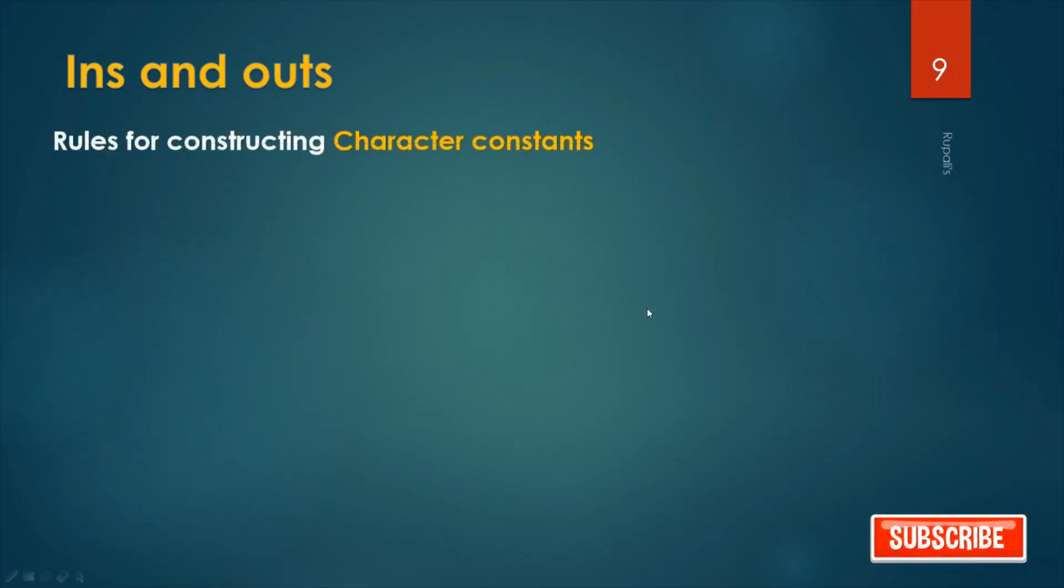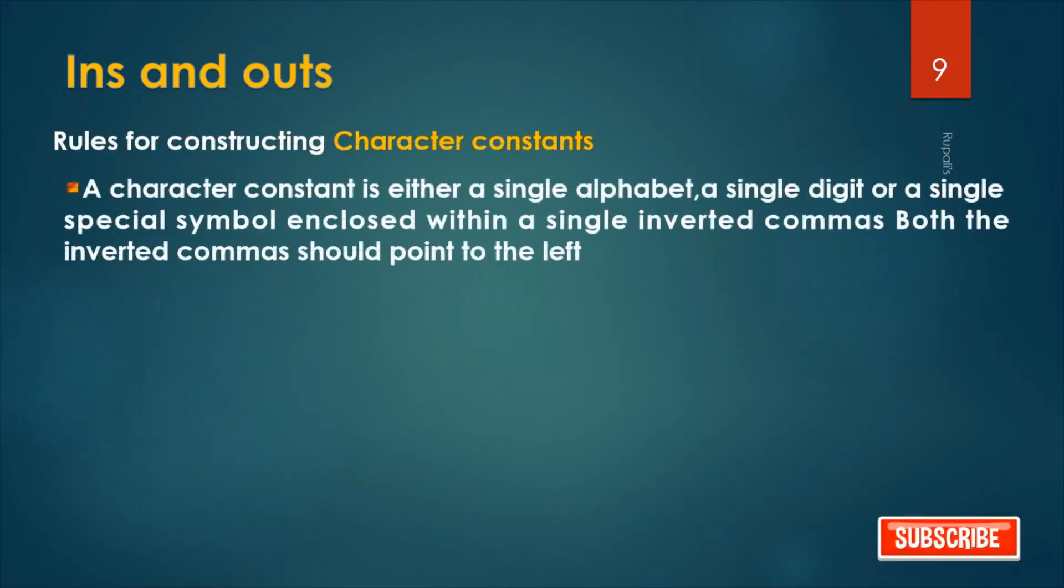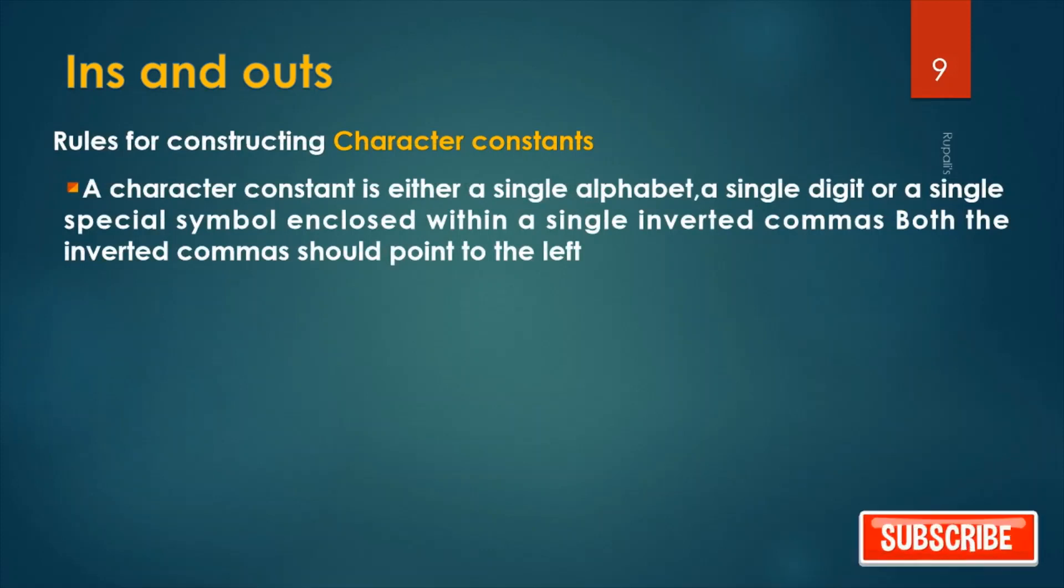Rules for constructing character constant: A character constant is either a single alphabet (a, b, c, d - either capital or small but single), a single digit (1, 2, 3 but single), or a single special symbol like hash or at symbol.